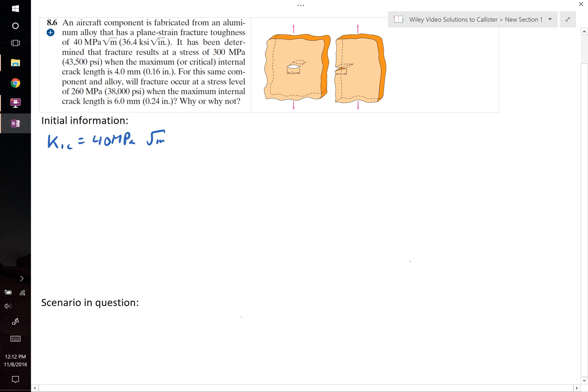Additionally, we're told that fracture occurs when a stress of 300 MPa is applied to a sample that has an internal crack of 4 mm. So our internal crack, let's call it x, is 4 mm.